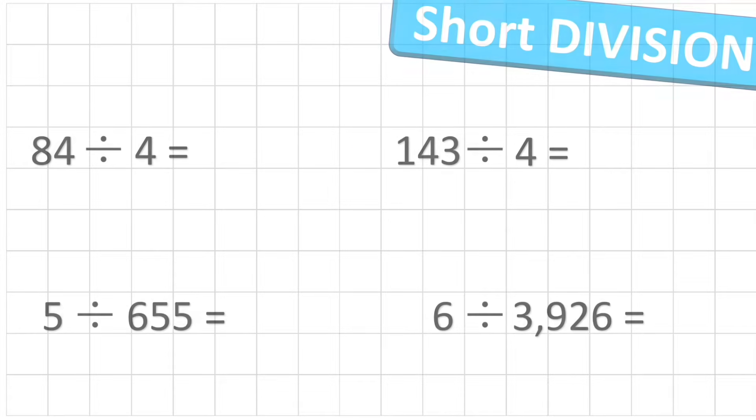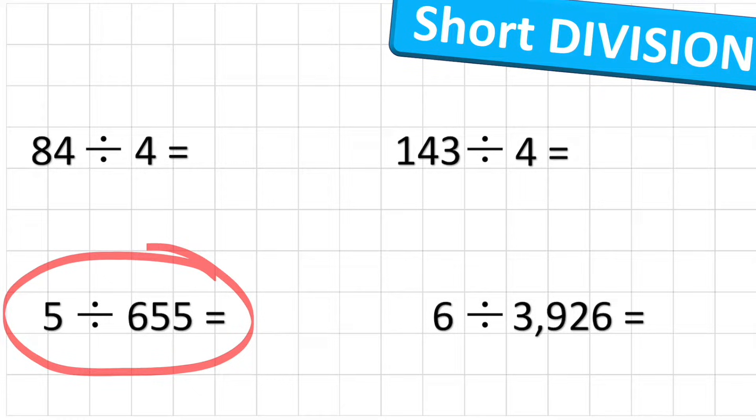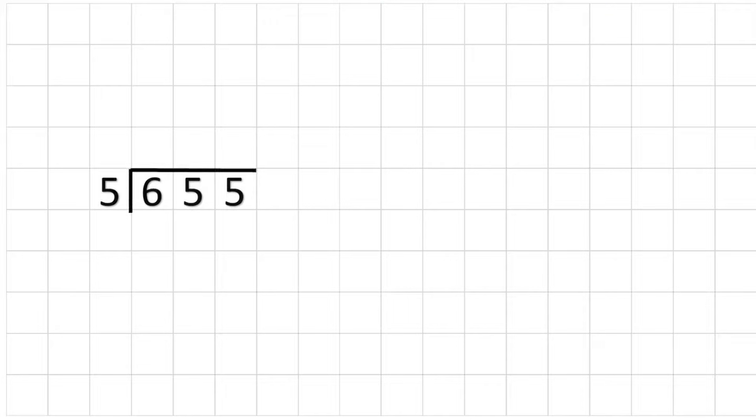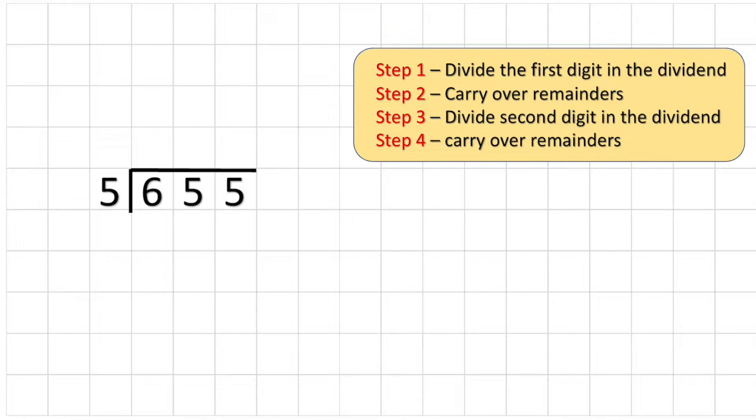Okay, that was quite a straightforward one. Let's look at a slightly harder one. Let's look at 655 divided by five. So first thing again we need to do is set up our bus stop method. I'm going to put my dividend of 655 inside the bus stop and five, my divisor, outside.